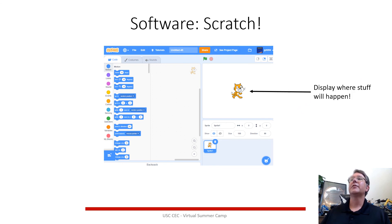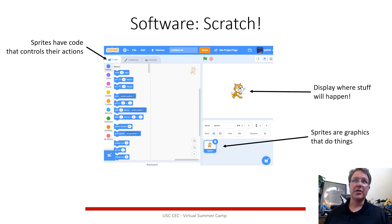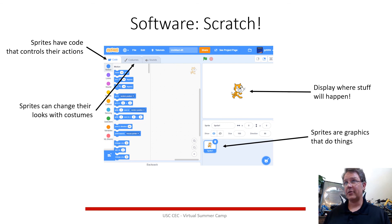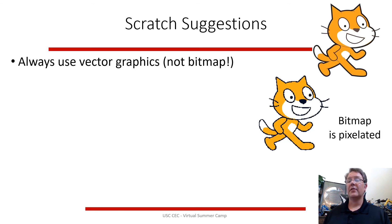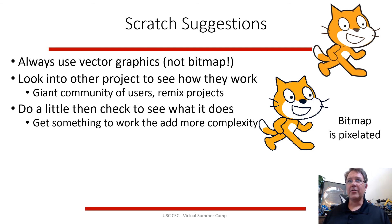The Scratch interface has a display where things move around, sprites — individual graphics with behaviors — and code blocks for movement, size, color changes, and more. Sprites can also change their costume, switching between different visual appearances. Always use vector graphics, not bitmap — bitmap looks pixelated when blown up full screen. You can look at other people's projects and use Remix to copy a project to your account, then change the artwork or code.